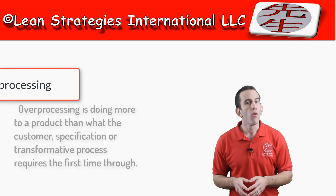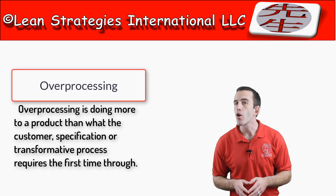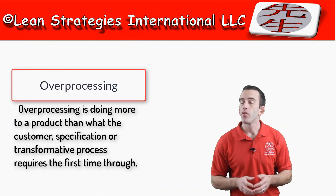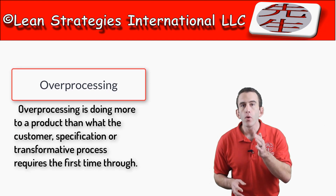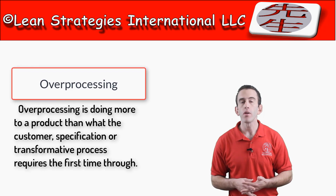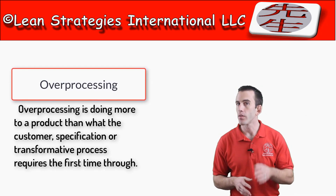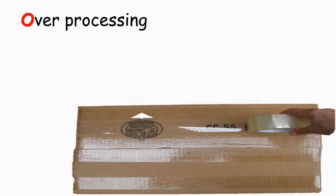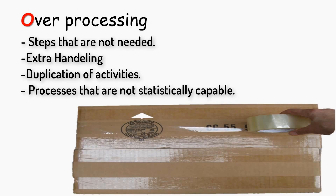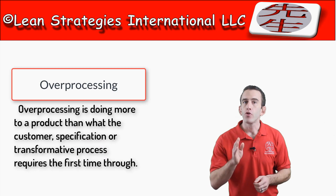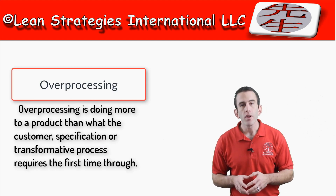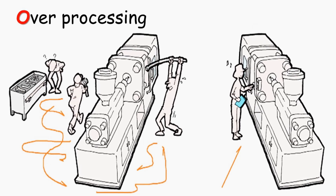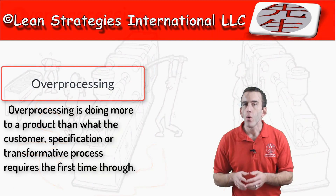Next, we have the waste of overprocessing — the hardest type of waste to see because it is usually masked with workarounds and the hidden factory. The easiest way to define overprocessing is doing more to a product than what the customer, specification, or transformative process requires the first time through. It is sometimes called inappropriate processing and includes steps that are not needed, extra handling, duplication of activities, and processes not statistically capable of producing desired results. One example would be a worker using screws and fasteners where clamps and more efficient tools could be used.